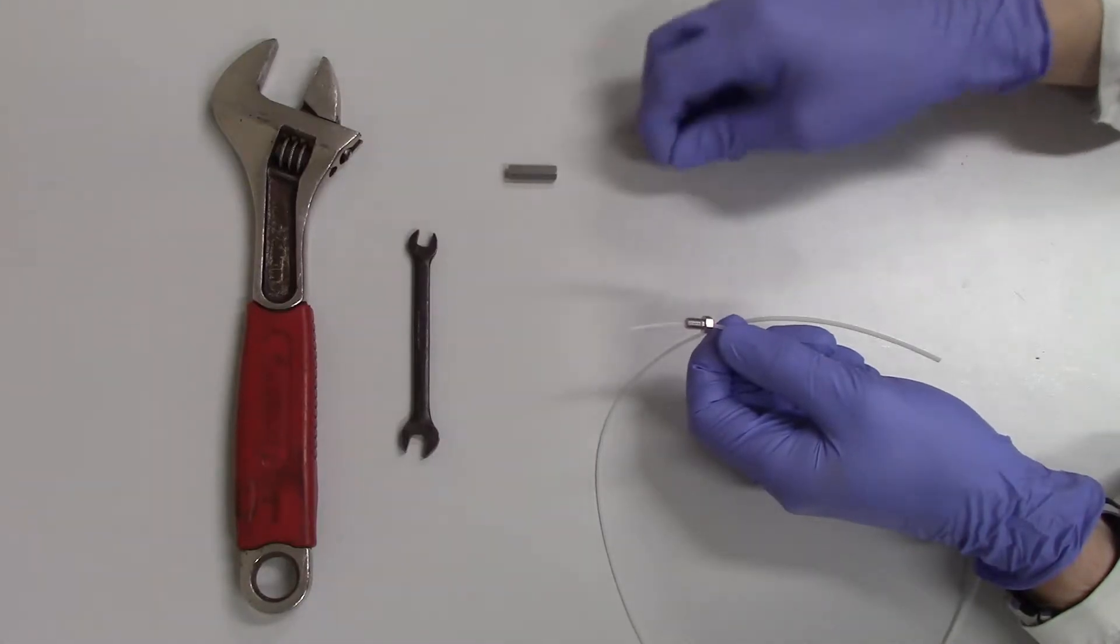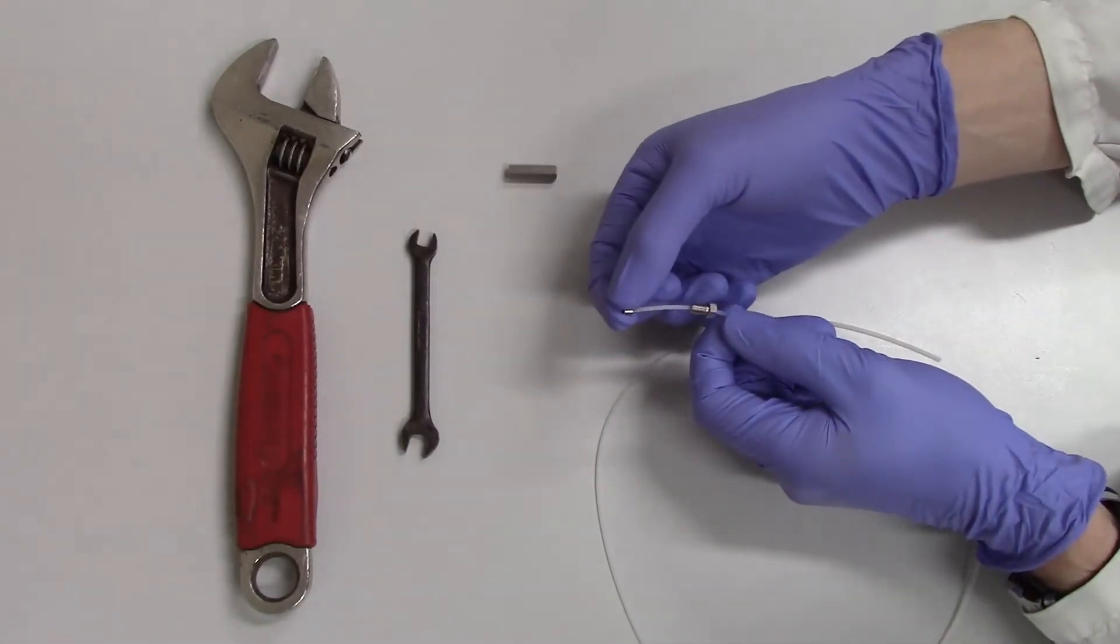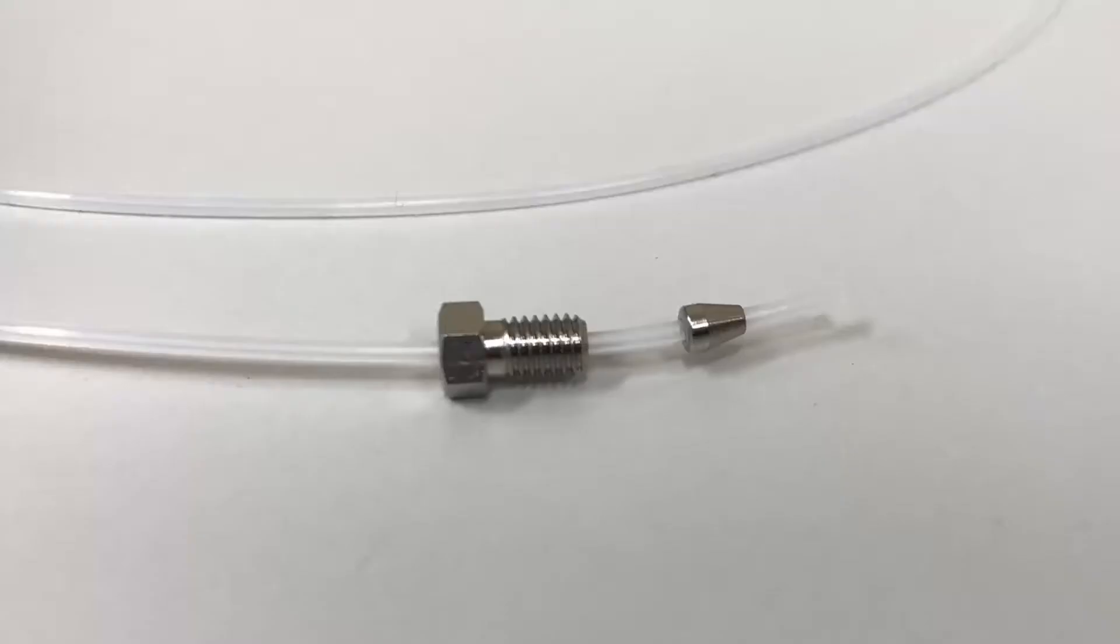Second, place the ferrule on the tubing so that the wide end is closer to the threads of the nut and the narrow side is closer to the end of the tubing.